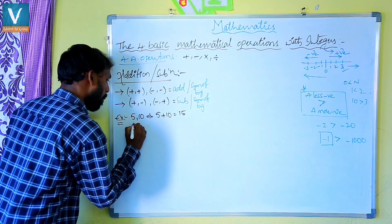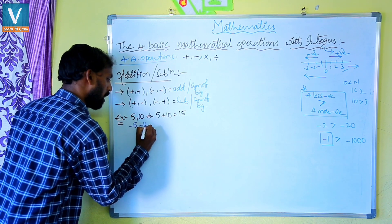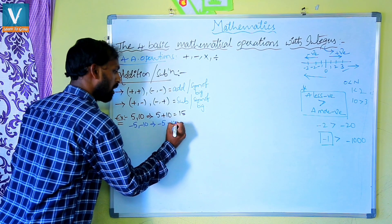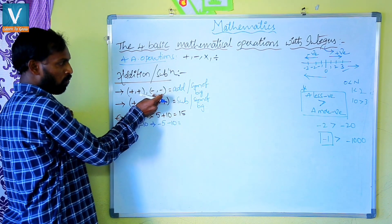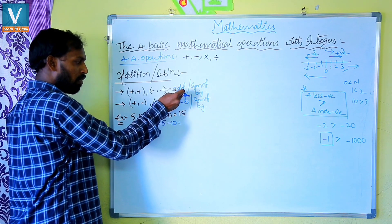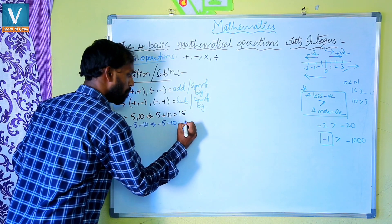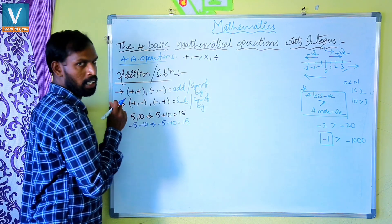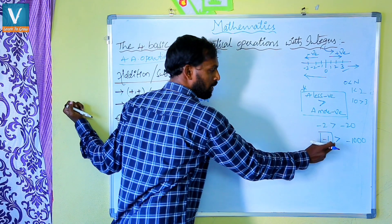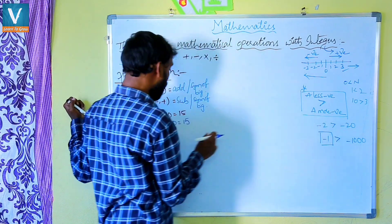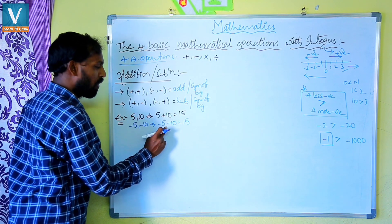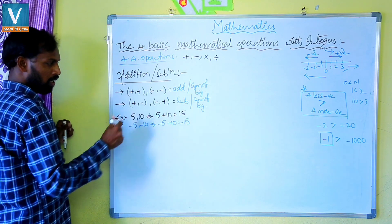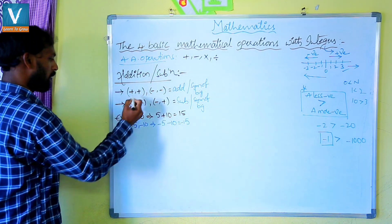Second case: both are negative — minus 5 and minus 10. This implies minus 5 and minus 10. Both are negative, so first we do addition: 10 plus 5 is 15. Then we give the symbol of the bigger number. Checking the numbers: 5 and 10 — the greater one is 10, and 10 has a minus symbol. So we use the minus symbol. The answer is minus 15.